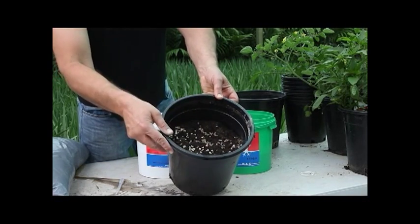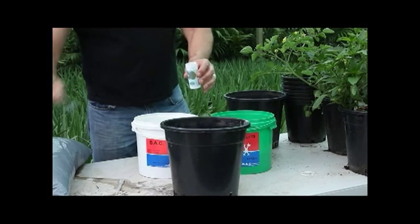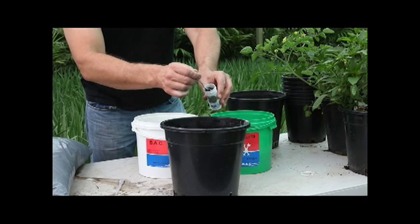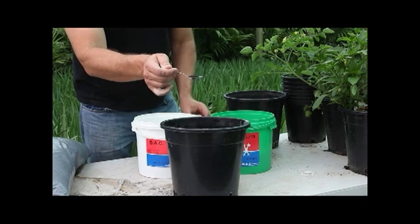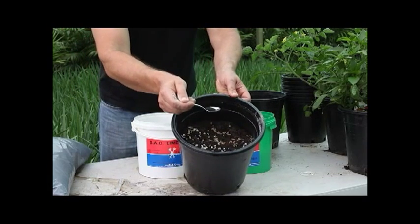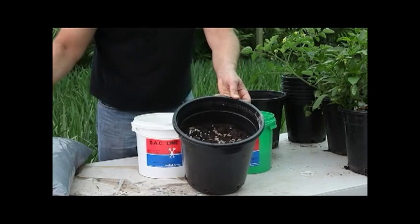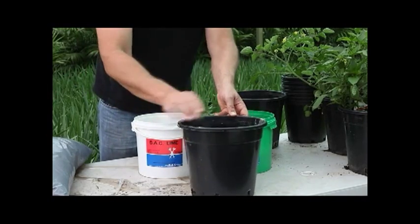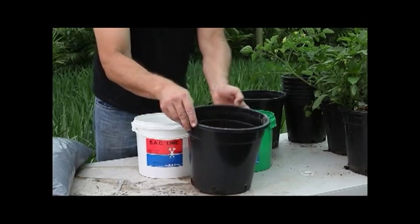And what that does is enhances the humus structure or the rhizosphere and allows for the next stage which is the funky fungi, allows for that to colonize throughout the medium. And what mycorrhizal fungi does essentially is allows for a lot more phosphorus and potassium uptake as well as for more expansive root growth.